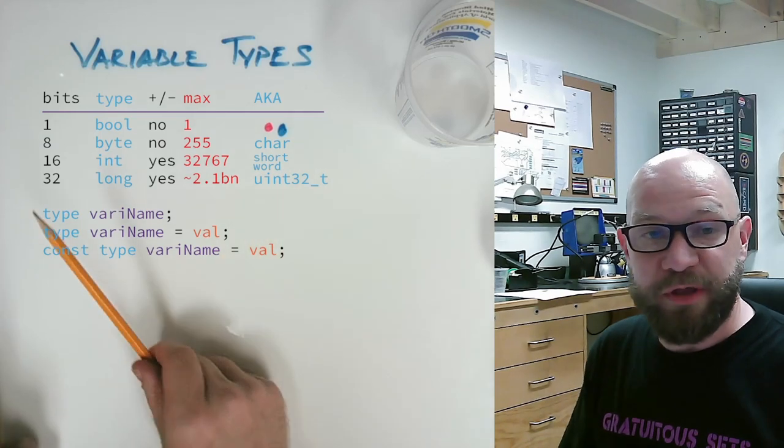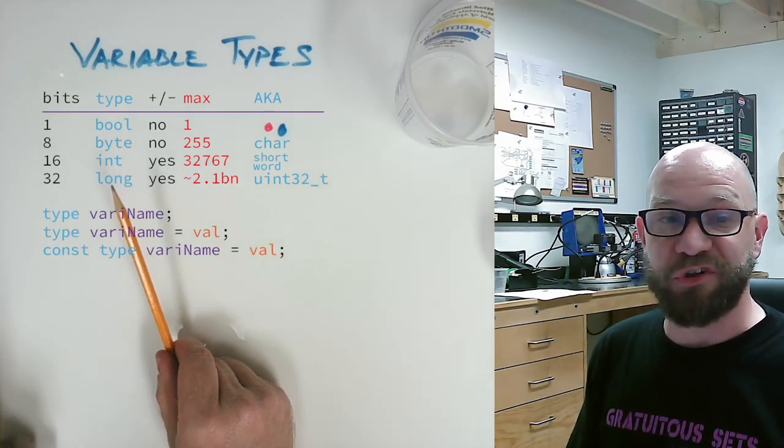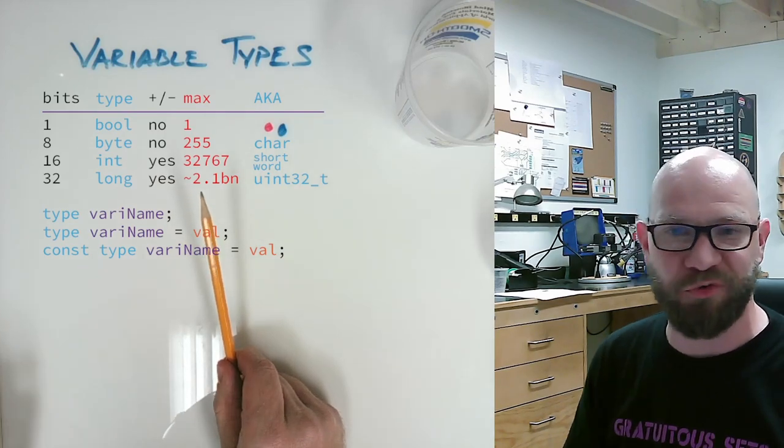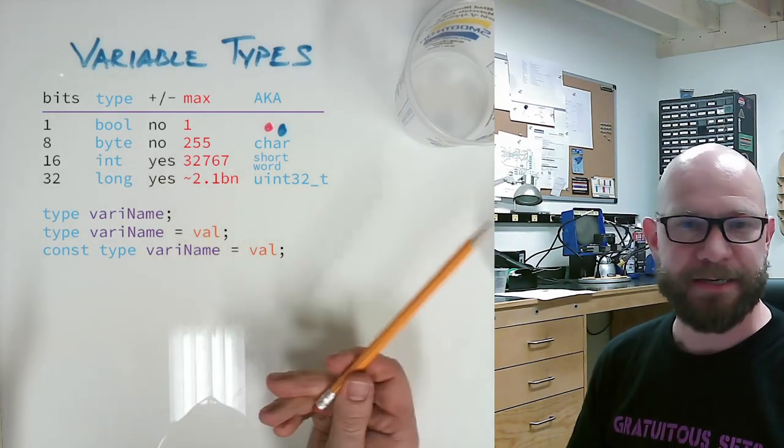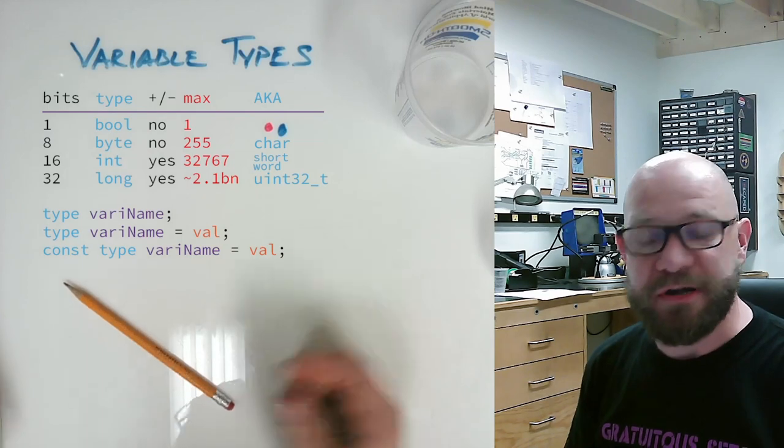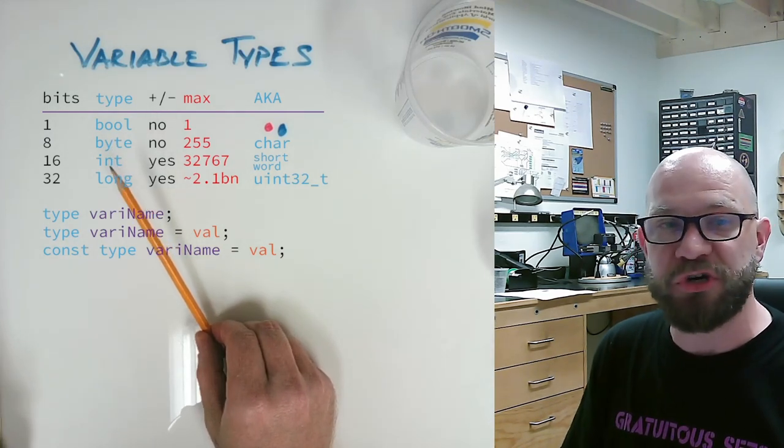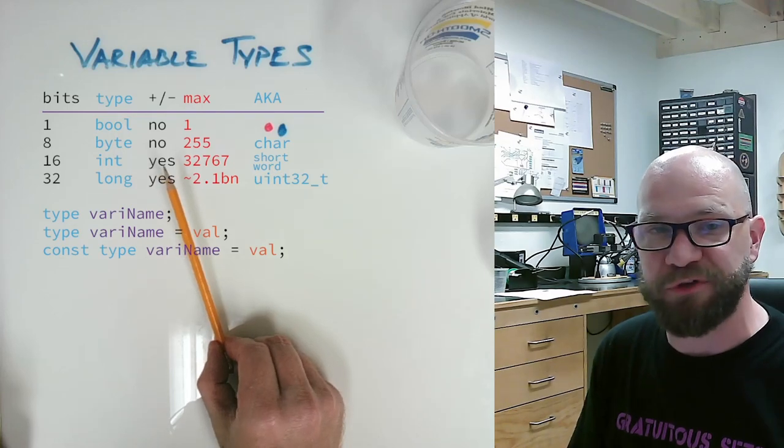In a very similar pattern, if we get up to 32 bits, that gives us what's called a long. They are naturally signed and can be about plus or minus 2.1 billion, which we rarely ever need. For most of my purposes, I'm either using a Boolean, a byte, and sometimes an integer, if I may need the plus or minus.